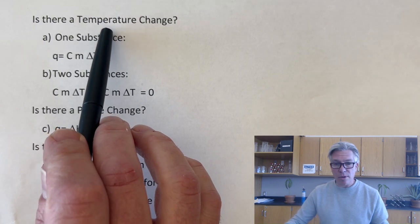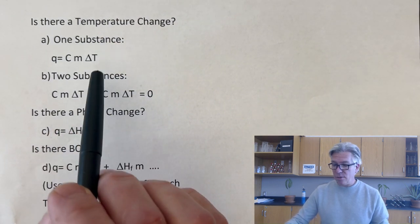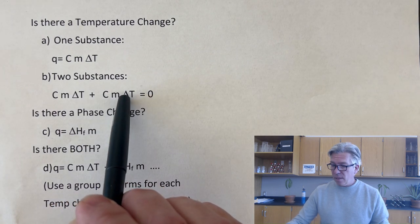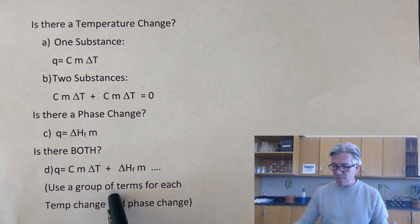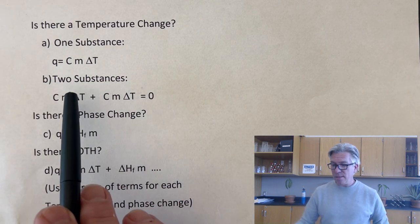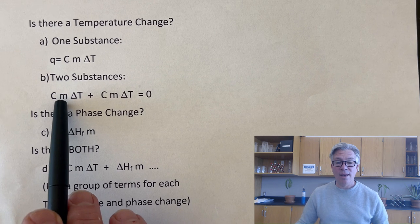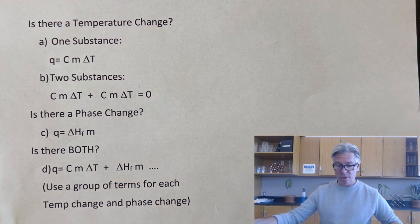Is there a temperature change in the word problem? Are we talking about one substance or two substances? Whenever there's two substances, you need C m ΔT for one and C m ΔT for the other, and we're going to set them equal to zero. So let's get into it.